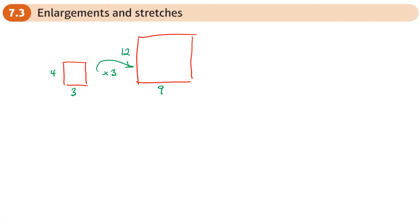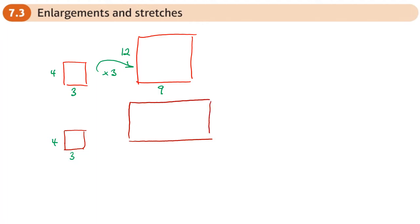What a stretch does is it enlarges in one direction — in the x direction or the y direction. So for example, if we started with the same shape of three and four, we could end up with nine in the x direction and eight in the y direction. In the x direction that's a stretch of three, and in the y direction a stretch of two. Don't assume it's the same in both directions — a stretch will be different in both directions.